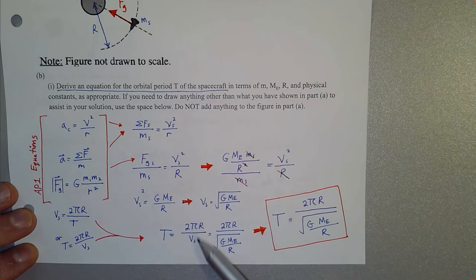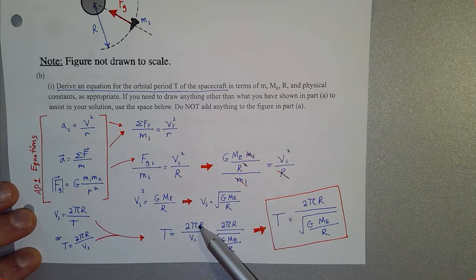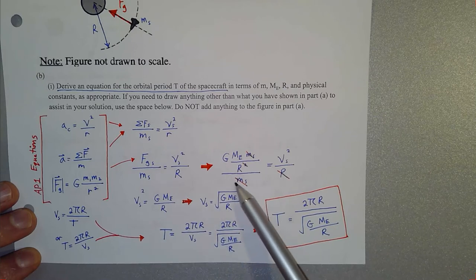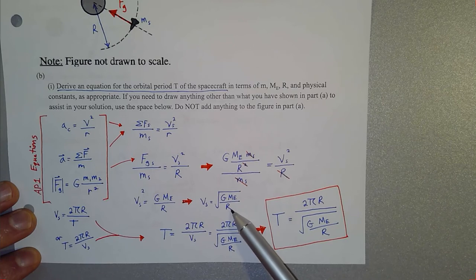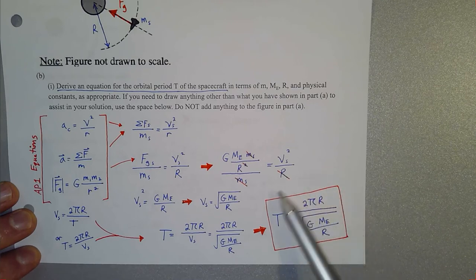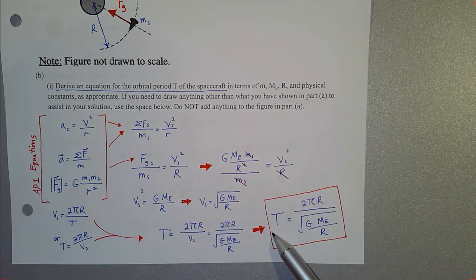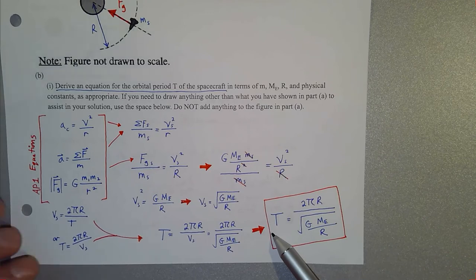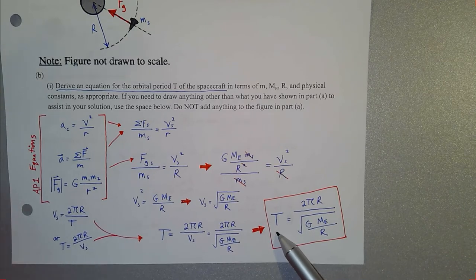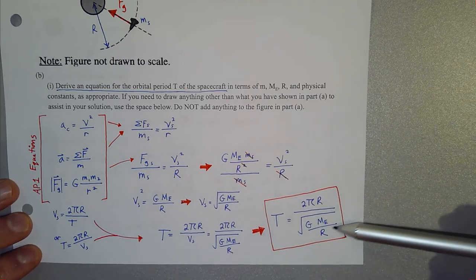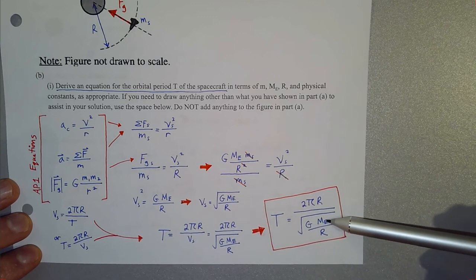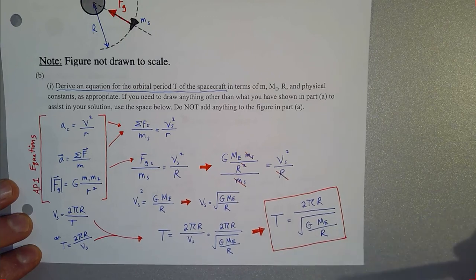Now we plug that orbital speed expression into our period equation. Period equals circumference over speed: T = 2πR divided by the square root of (G·M_E / R). This gives the time in seconds for an object to orbit the Earth once. That is our final expression for the orbital period.